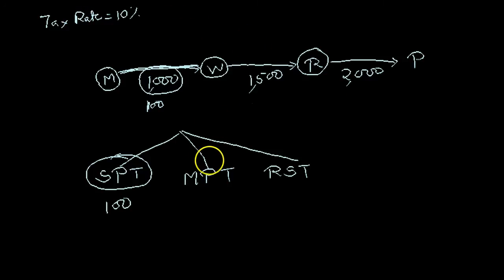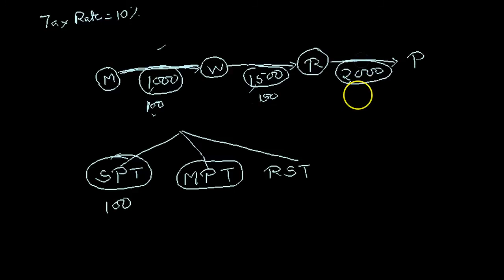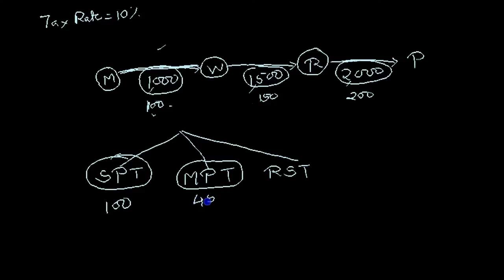In the Multiple Point Tax system, tax will be levied at each and every sale. First sale: Rs. 1000, tax Rs. 100. Second, wholesaler to retailer: Rs. 1500, tax of 10% is Rs. 150. Retailer selling to the public at Rs. 2000, again a tax of 10%, that is Rs. 200. So the total comes to Rs. 100 + Rs. 150 + Rs. 200, that is Rs. 450 will be the tax collected by the government under this system.